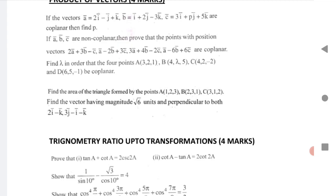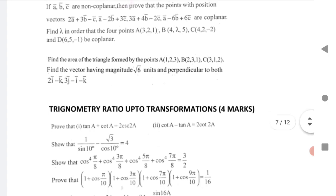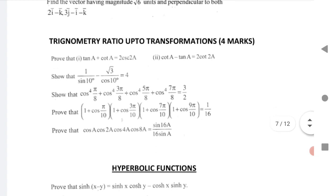Find the area of a triangle formed by the three vertices. Next, find the vector having magnitude root 6 units and perpendicular to each other.